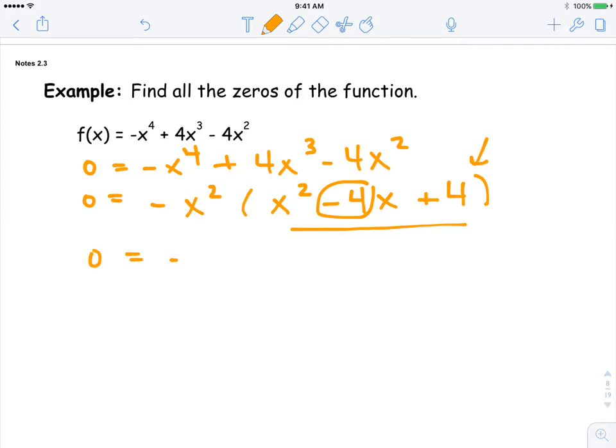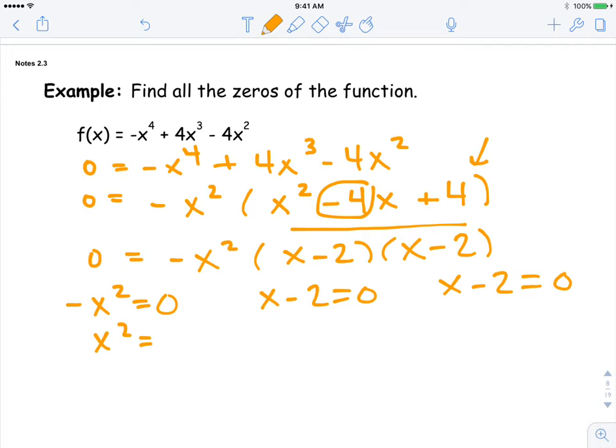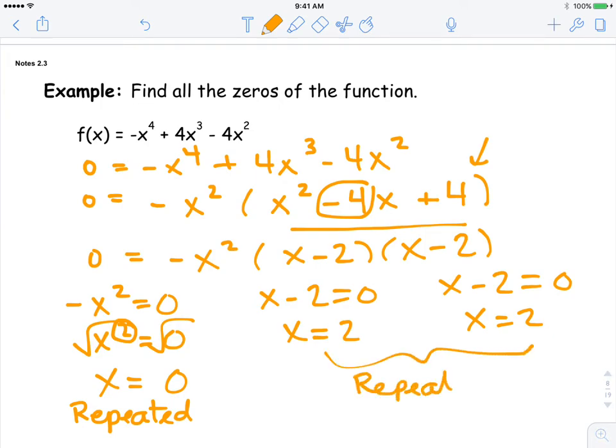Well, that would be negative 2 times negative 2. And now we're going to go ahead and use our zero product property. So our first factor is negative x squared. Our second factor is x minus 2. Third factor is x minus 2. We would divide this by negative 1. We're still going to get zero. Then we would square root it, and we get x equals zero. This is called a repeated zero because it has that x squared. Now you're not going to see two x-intercepts at zero. Add 2 to both sides. So this is another repeated zero.